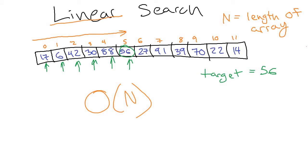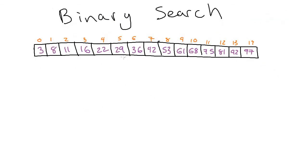We won't spend more time on linear search. Binary search, on the other hand, we're going to spend a little more time with. In the binary search algorithm, the first important thing is that it will only work if the array is in sorted order — numbers from smallest to biggest. If it's not in sorted order, this is not going to work at all.